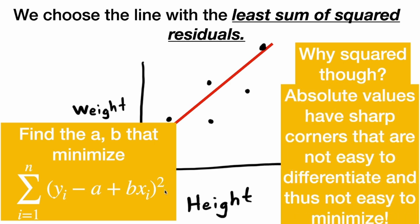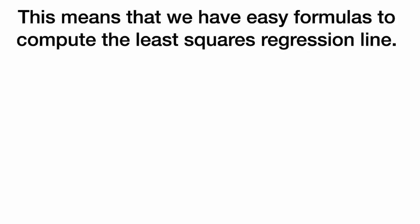However, if this squared was an absolute value, it would have sharp corners. It would not be differentiable and it would not be easy to minimize this function. This means that we have easy formulas to compute the least squares regression line because we can solve this equation.